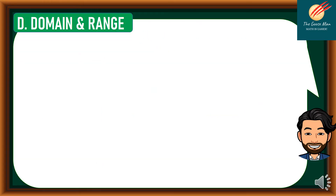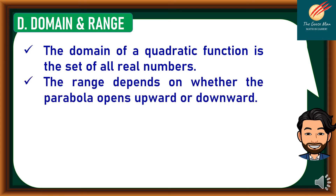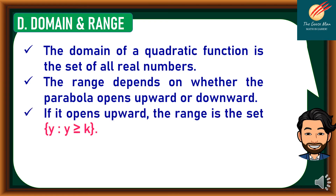So let's move on to the fourth property of the graph of a quadratic function, which is domain and range. The domain of a quadratic function is the set of all real numbers. The range depends on whether the parabola opens upward or downward. If it opens upward, the range is the set of y such that y is greater than or equal to k, which is the minimum value.